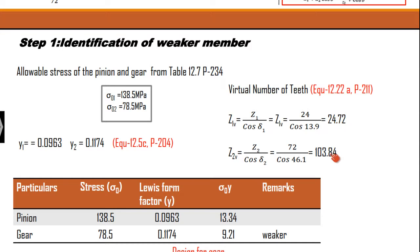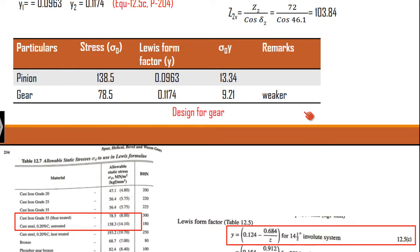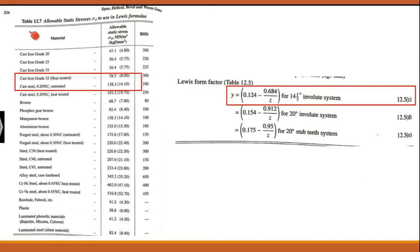Using these values of Zv1 and Zv2, we calculate y1 and y2. This is the same Lewis form factor — the equation is the same as we considered for the spur gear. The table for identifying the weaker member is also the same: we identify it by multiplying sigma and y and finding the least value. Here, the gear is the weaker member. These values come from table 12.7, and the y equation for the 14.5 degree involute system is equation 12.5c.